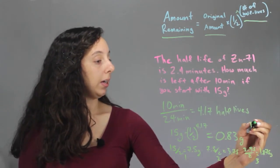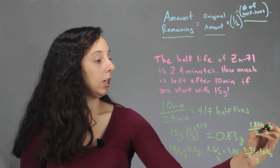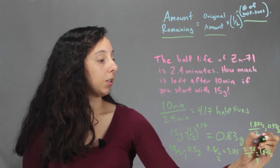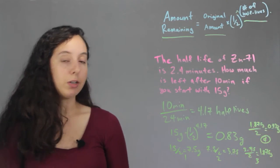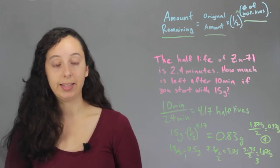So, 1.875 grams over 2 equals 0.938 grams. That's half-life number 4. And so remember, we already solved the problem. This is just a good double check to make sure what we did makes sense.